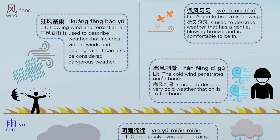Idioms that describe windy days. 描述起风的天气的成语。 狂风暴雨 — Howling wind and torrential rain. 狂风暴雨 is used to describe weather that includes violent winds and pouring rain. It can also be considered dangerous weather. 微风熙熙 — A gentle breeze is blowing. 微风熙熙 is used to describe weather that has a gentle, blowing breeze and is comfortable to be in. 寒风刺鼓 — The cold wind penetrates one's bones. 寒风刺鼓 is used to describe very cold weather that chills to the bones.